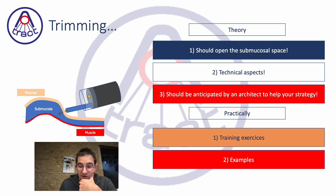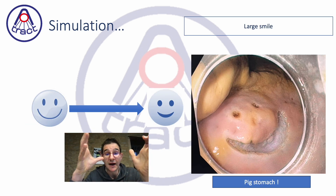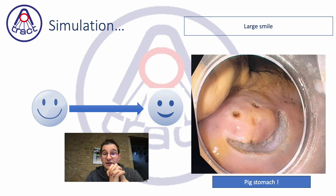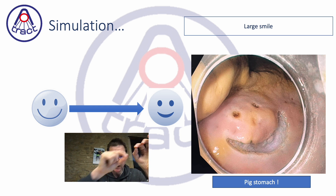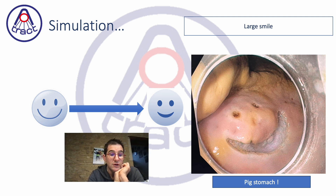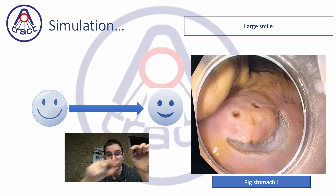Now for training exercises. The first important exercise is the smile shape exercise. On a model — isolated stomach, endogel, or whatever you prefer — you make a very tiny incision and then open it to form a nice smile shape. You don't want a closed smile; you want something larger and open.